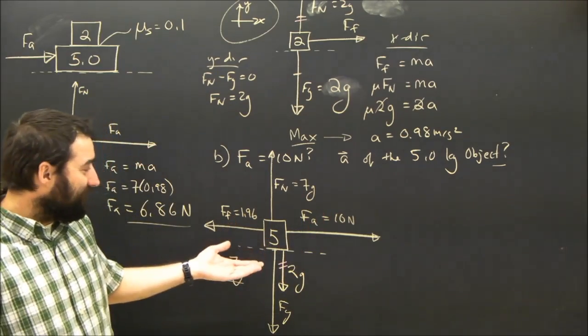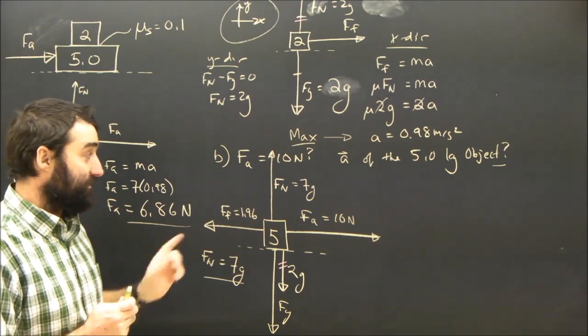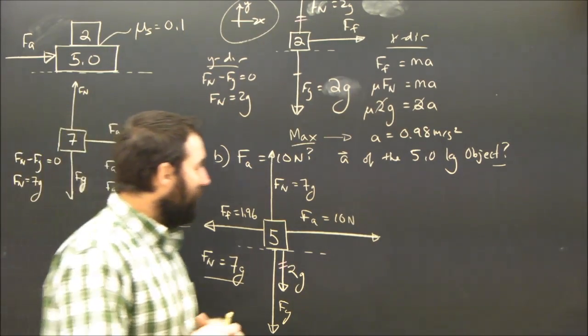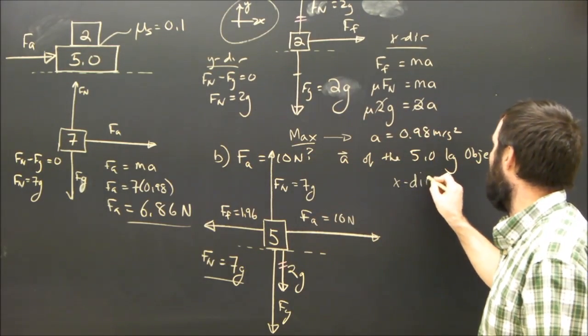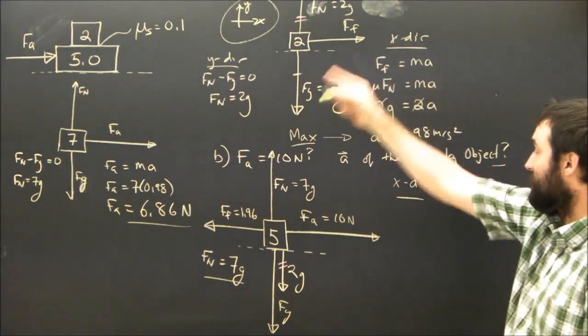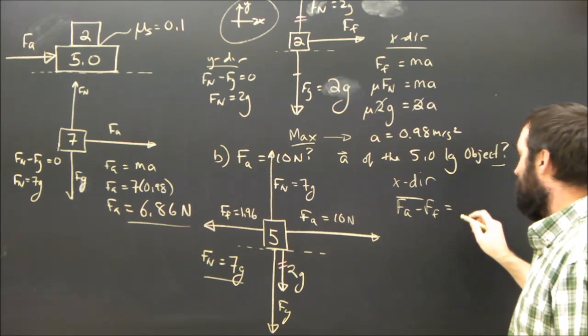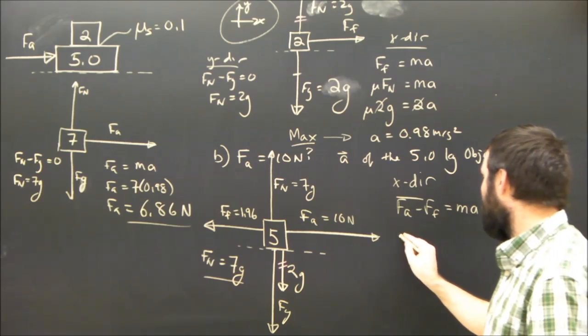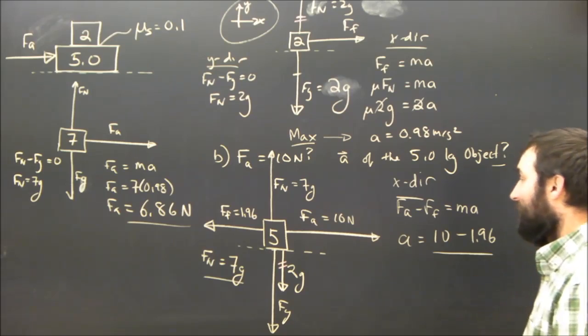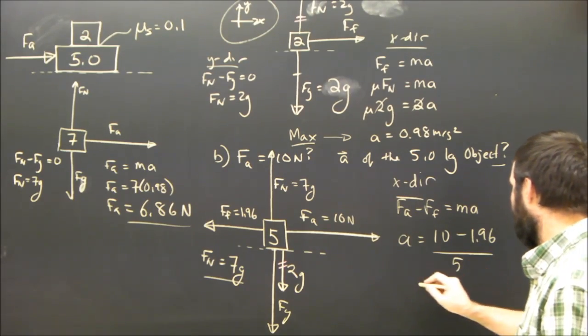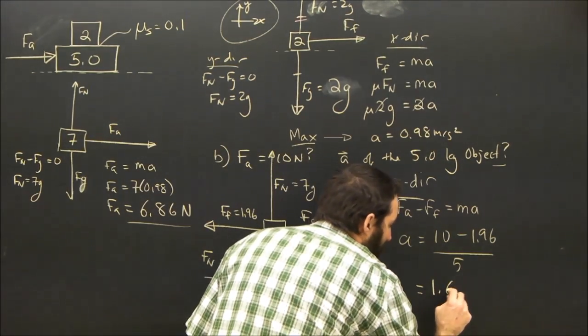And that doesn't matter in this question at all because mu here was zero, so we don't really need that. But once you're done this, you're probably going to do part 2 and you will need to understand that. So hopefully that makes a little bit of sense now. We just look at the x-direction equation and we can say to ourselves, my x-direction is still to the right, I have the same coordinate system for the whole question, that Fa minus Ff is equal to Ma. I'm trying to find the acceleration, so that means that 10 minus 1.96 divided by 5 is 1.6 meters per second squared.